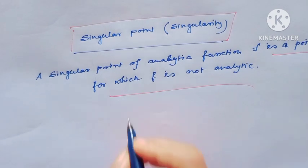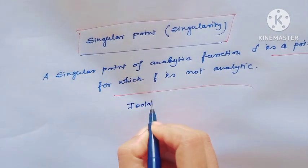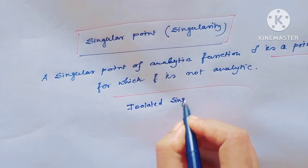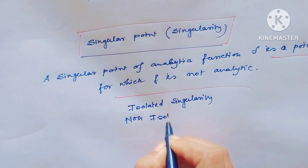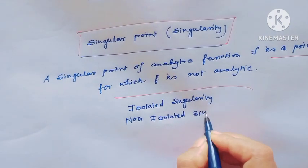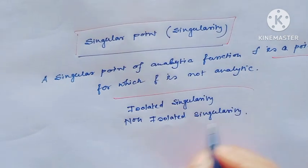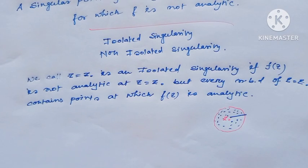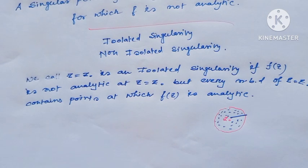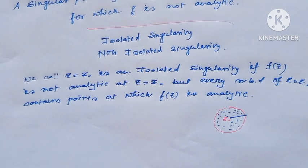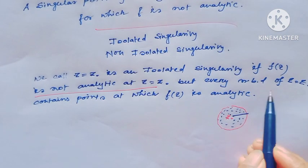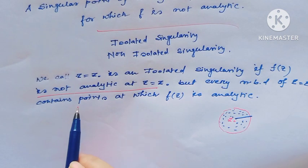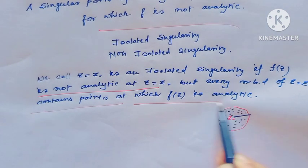Singularity is actually two types: one is isolated singularity and another is non-isolated singularity. Now I will see what is isolated singularity. We call z equal to z-naught is an isolated singularity if f(z) is not analytic at the point z equal to z-naught, but every neighborhood of z equal to z-naught contains points at which f(z) is analytic.